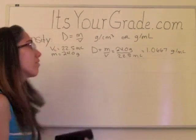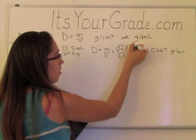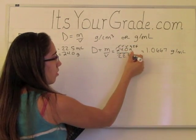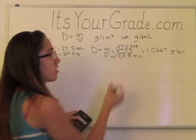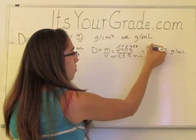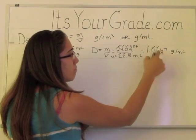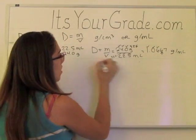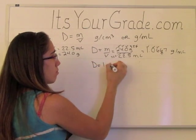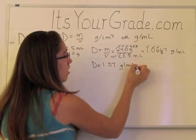24 divided by 22.5 gives us 1.0667 grams per milliliter. We need to take significant figures into account. The mass has 3 significant figures, the volume has 3 significant figures as well, so our answer needs to have 3 significant figures. We will need to round up because the 6 is greater than 5. So our answer is density equals 1.07 grams per milliliter.